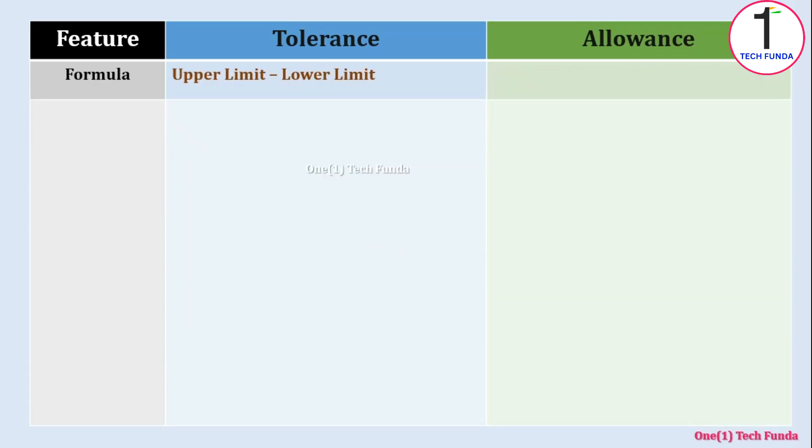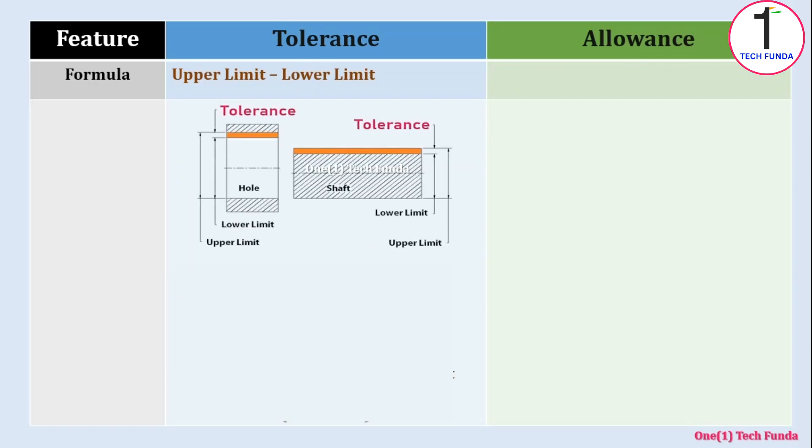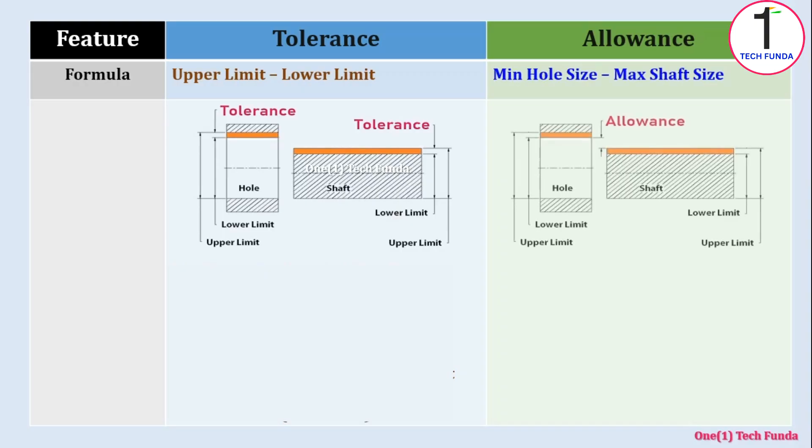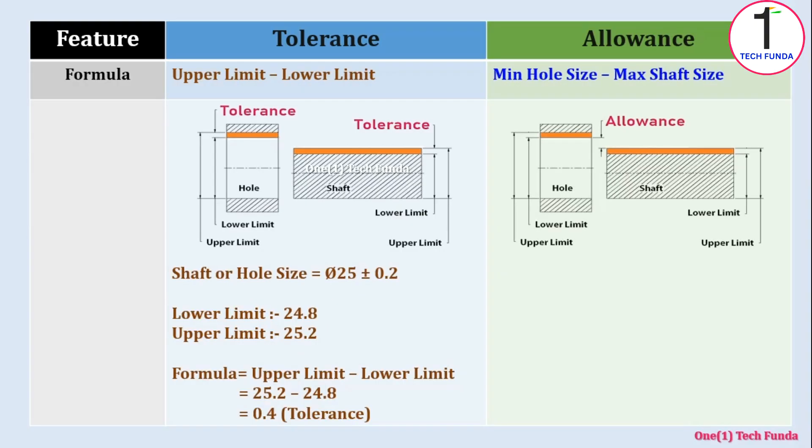Formula of tolerance is upper limit minus lower limit. Shaft or hole diameter is 25 mm plus minus 0.2 tolerance. Means lower limit is 24.8 mm and upper limit is 25.2 mm. After putting the values in formula, we will get the tolerance, that is 0.4 tolerance.